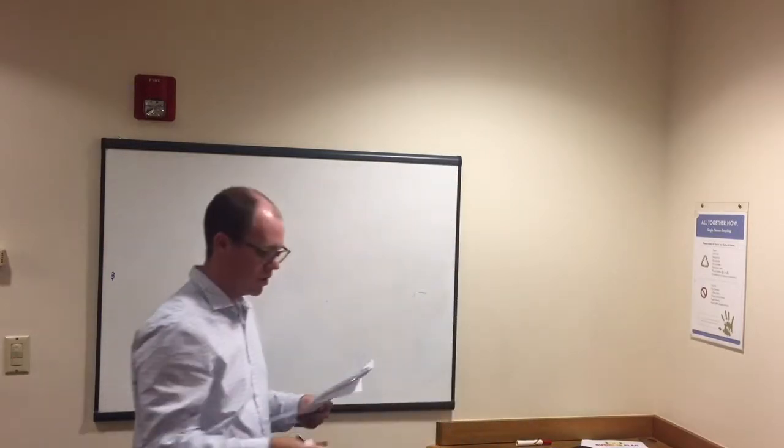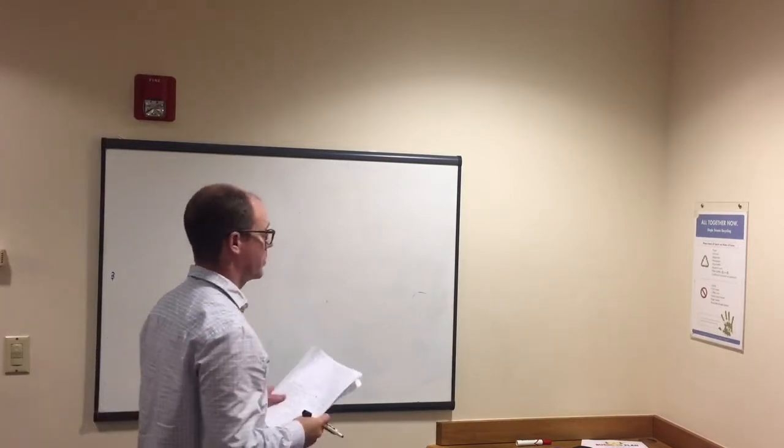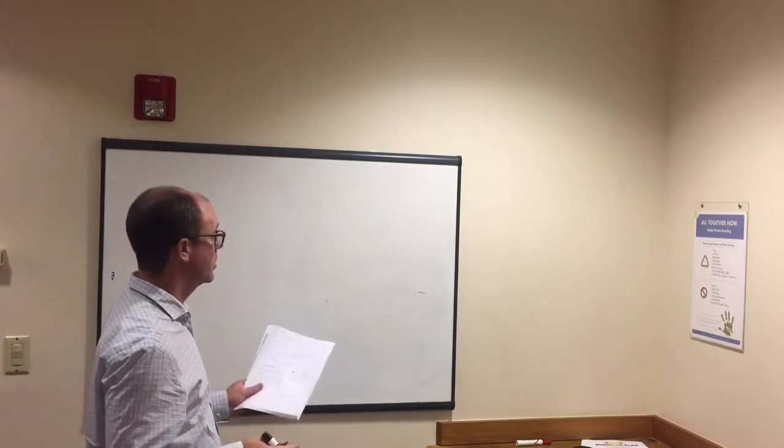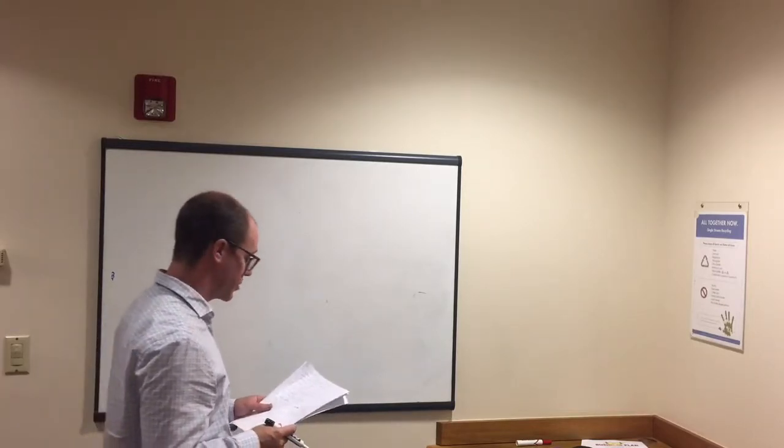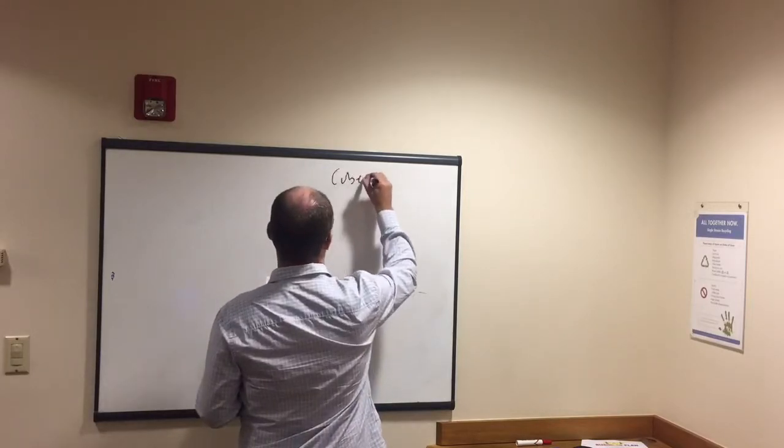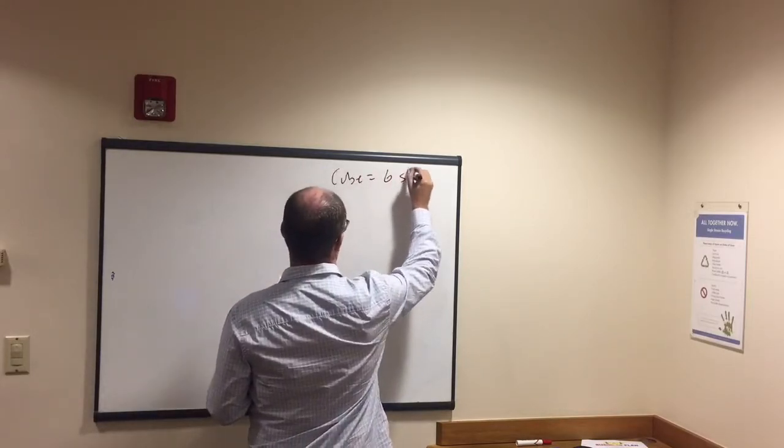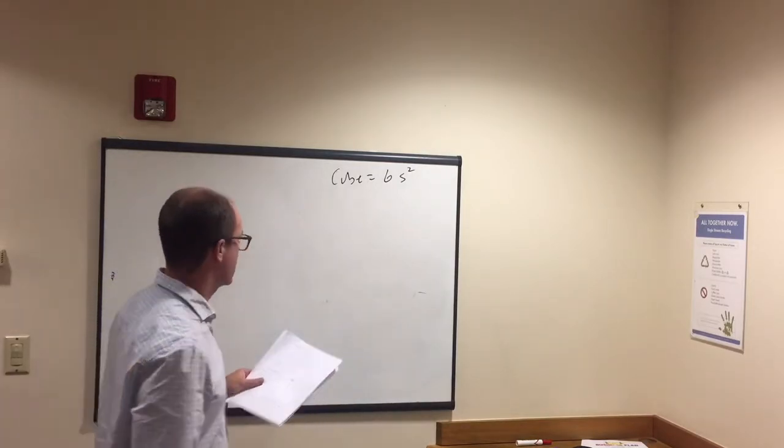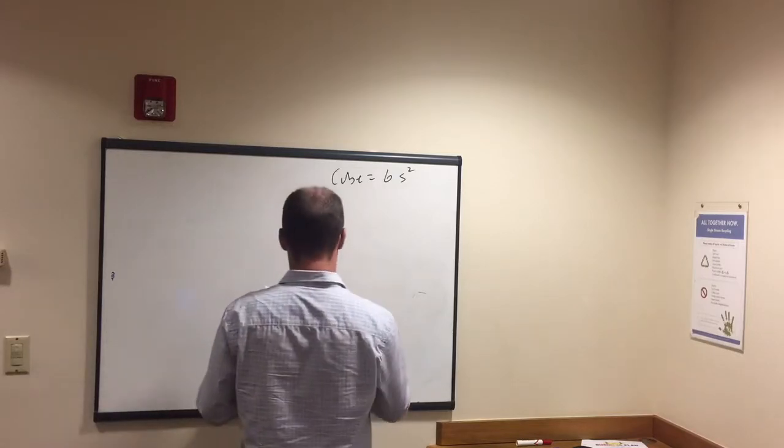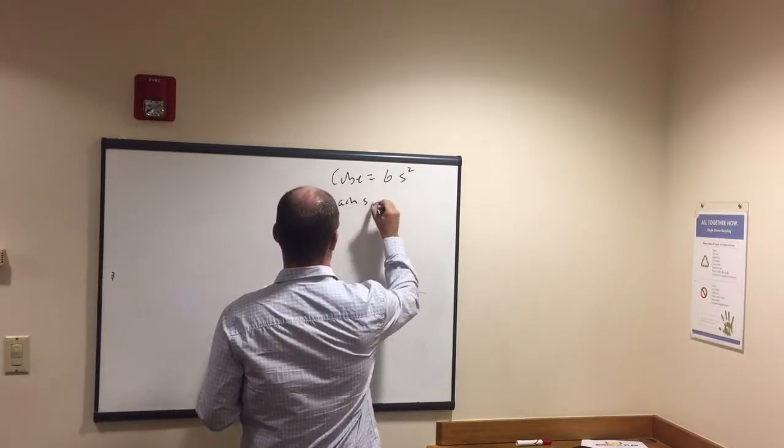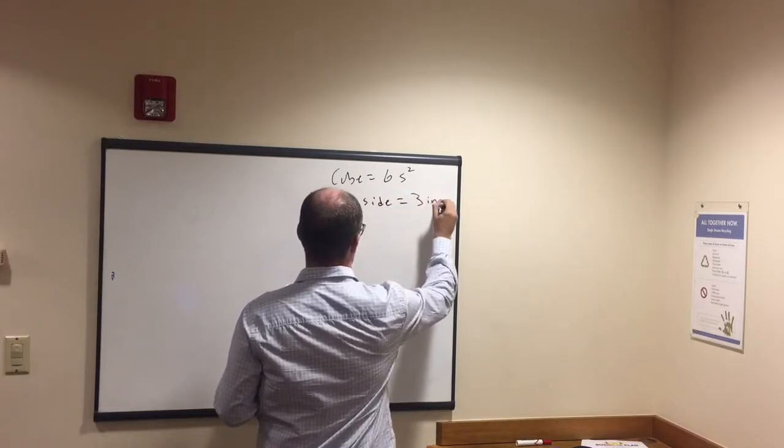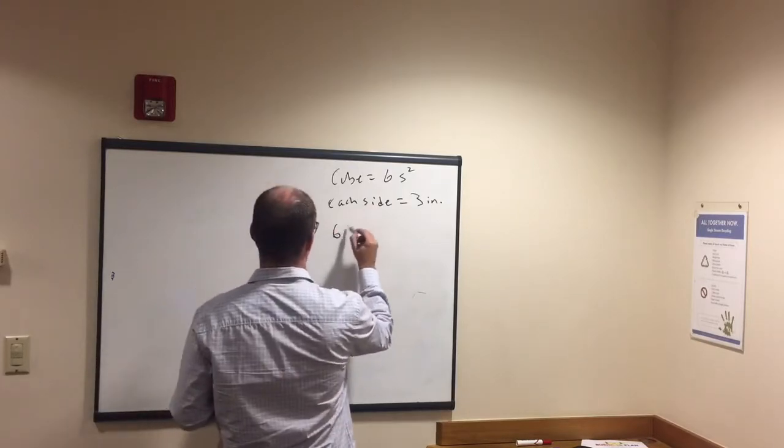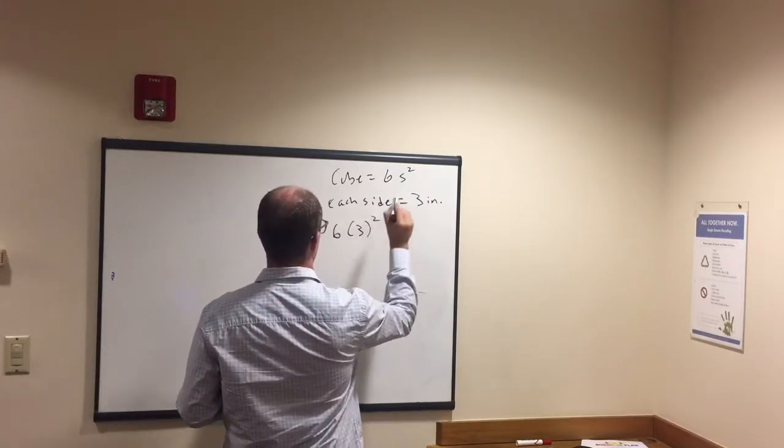One more type. Cube. So cube formula is a little bit easier to remember. But we want to make sure we don't think that we're doing volume. Because volume of a cube and surface area of a cube are two different formulas. So for a cube, it's 6s squared. S is side. So if it says each side is 3 inches. Each side equals 3 inches. So what are we going to do now? We're just plugging this in. We have 6 times 3 squared.